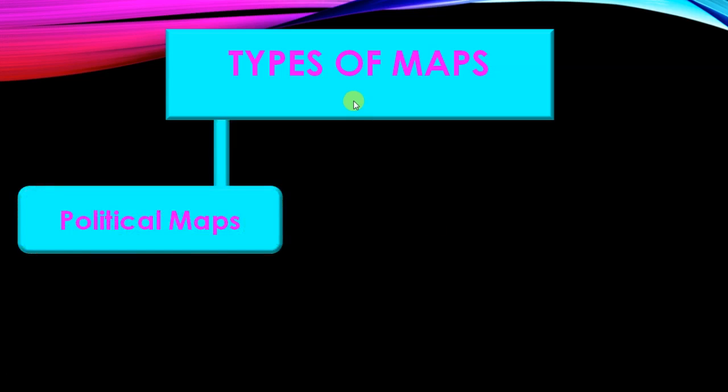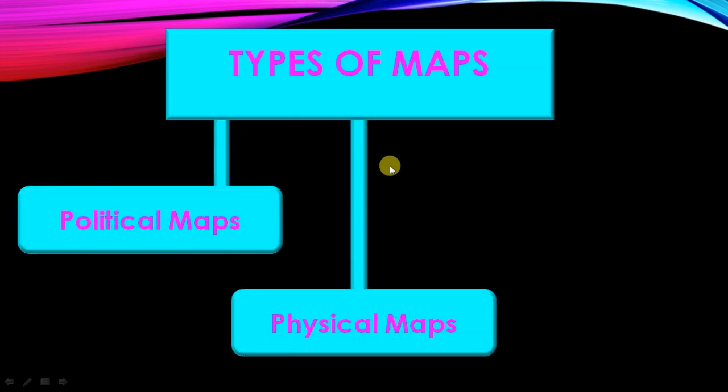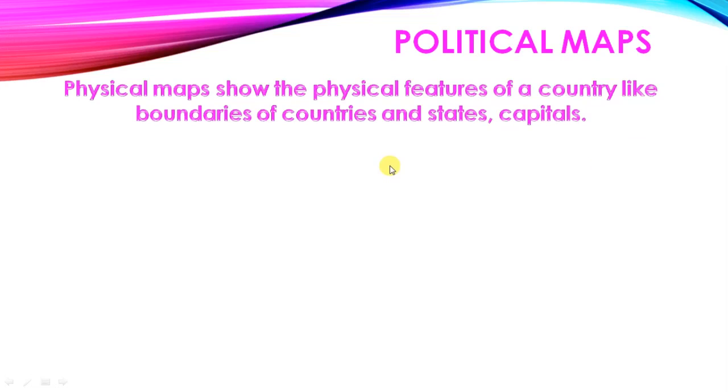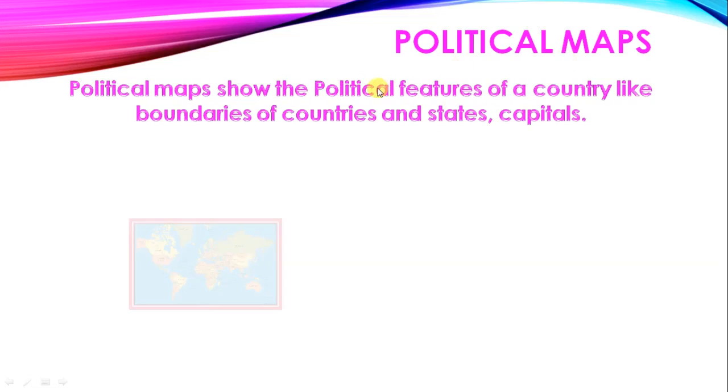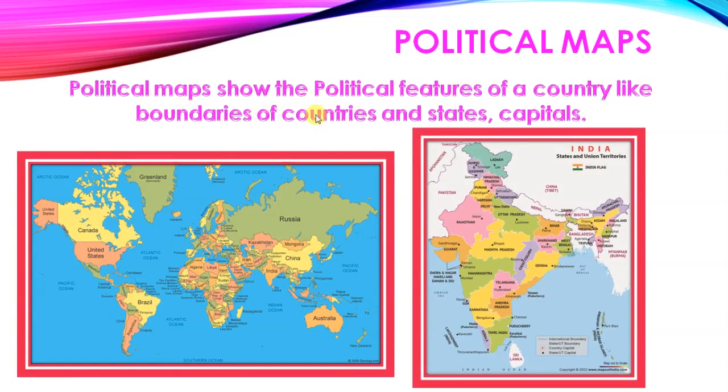Types of maps now. Political map, Physical map, and Thematic map. Political map shows the political features of a country like boundaries of countries and states, capitals. It shows the boundaries of countries, states, and capitals also. These capitals shown here.